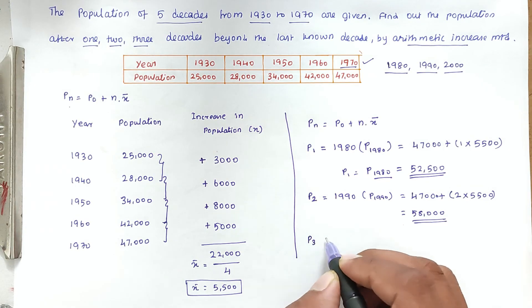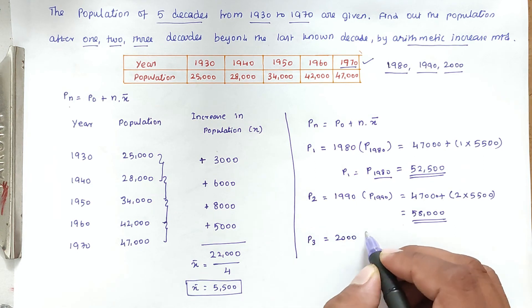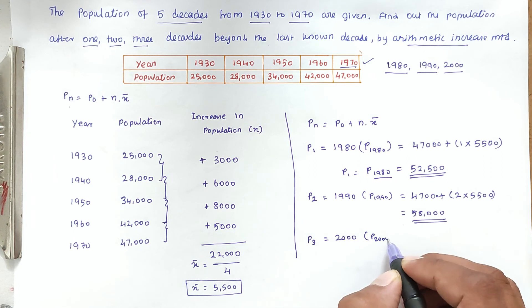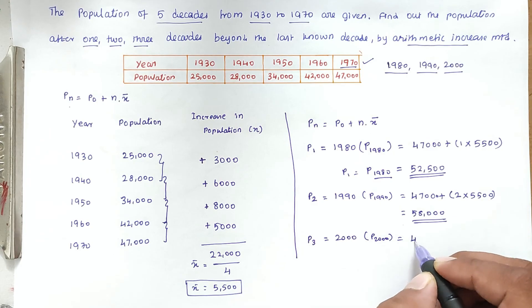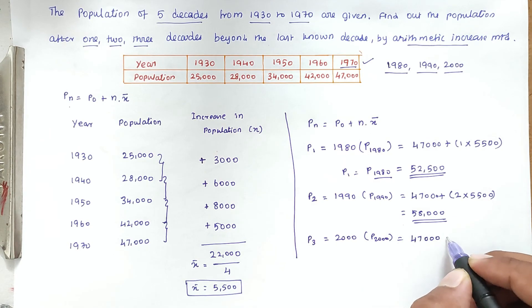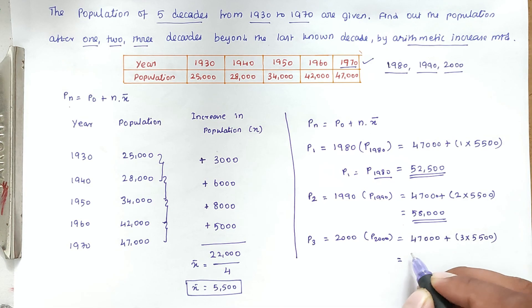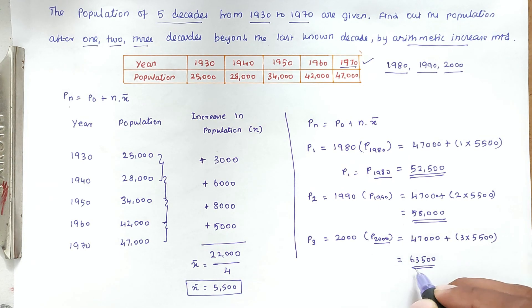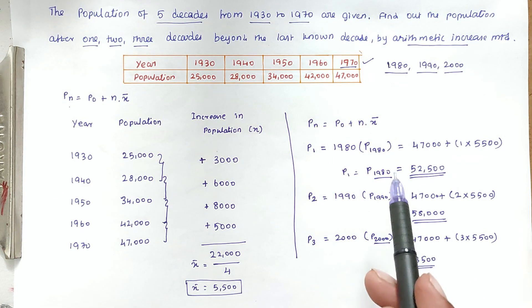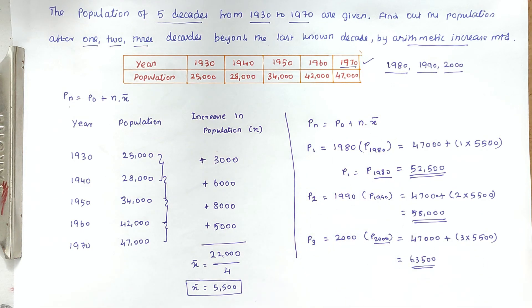For 2000 (n = 3): P₂₀₀₀ = 47,000 + 3 × 5,500 = 47,000 + 16,500 = 63,500. So the population forecast for 2000 is 63,500. Likewise, we can calculate for every year and decade using this method. We will see the next problem in the next video. Thank you.